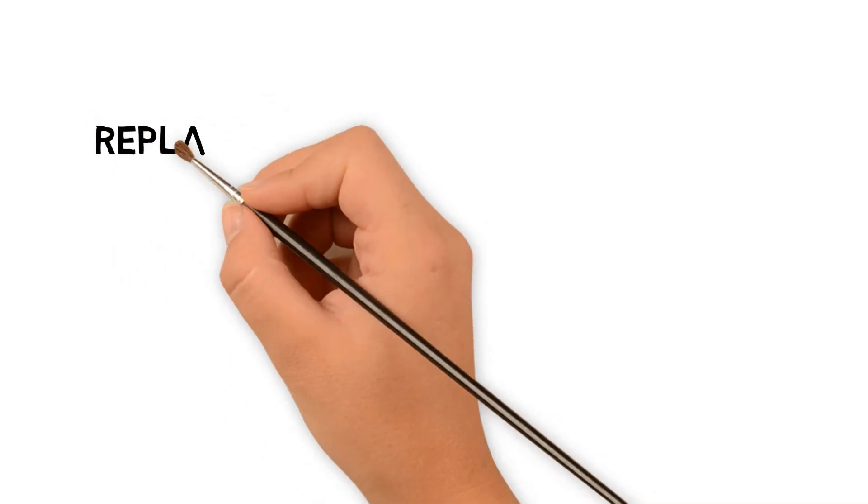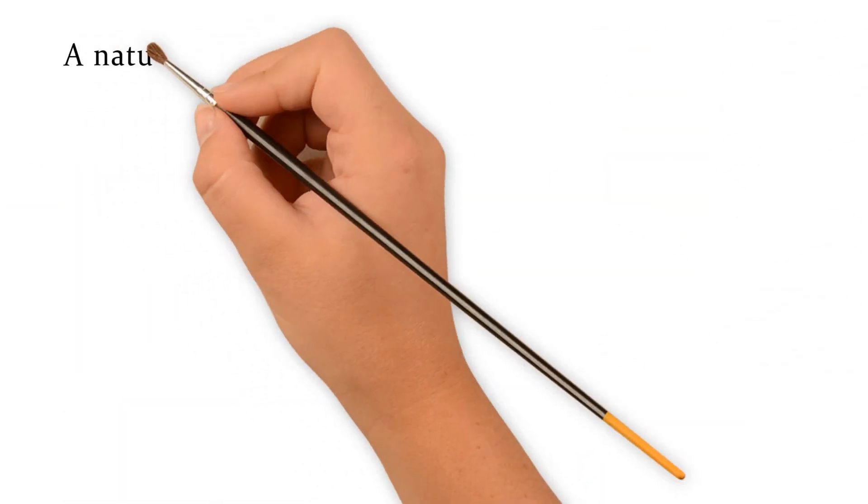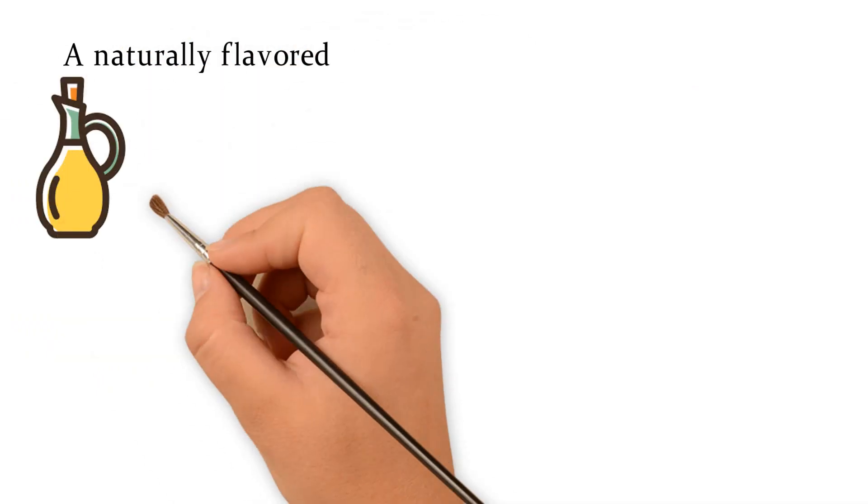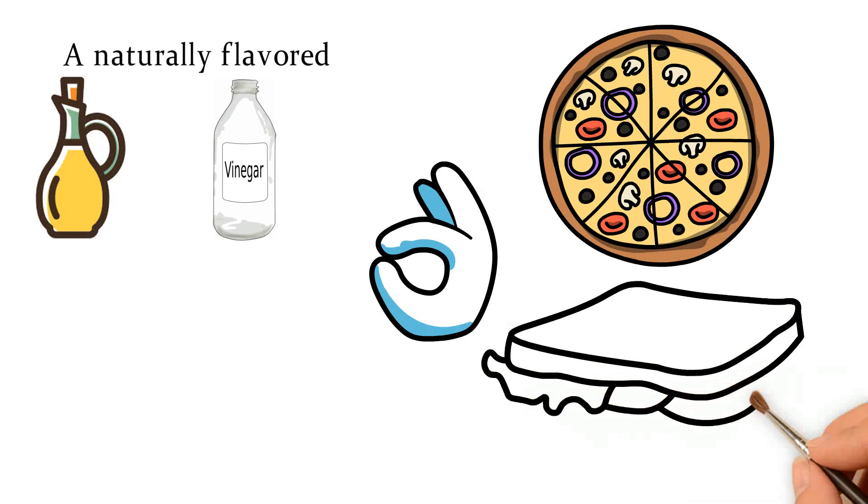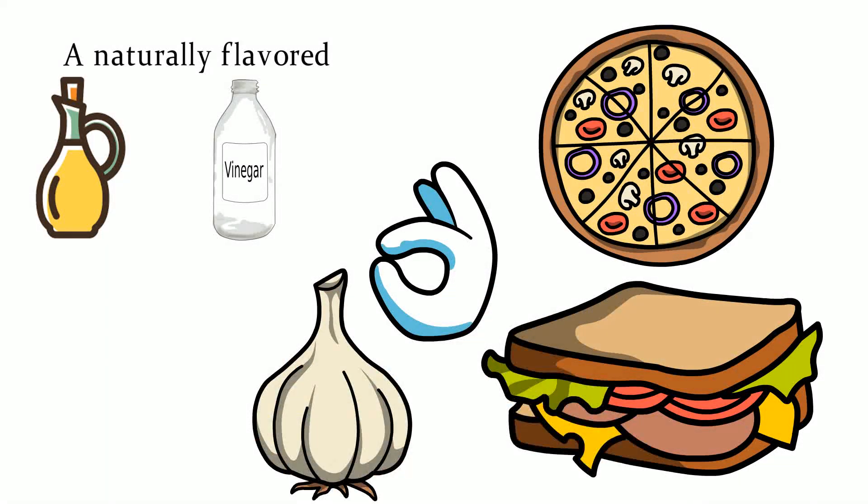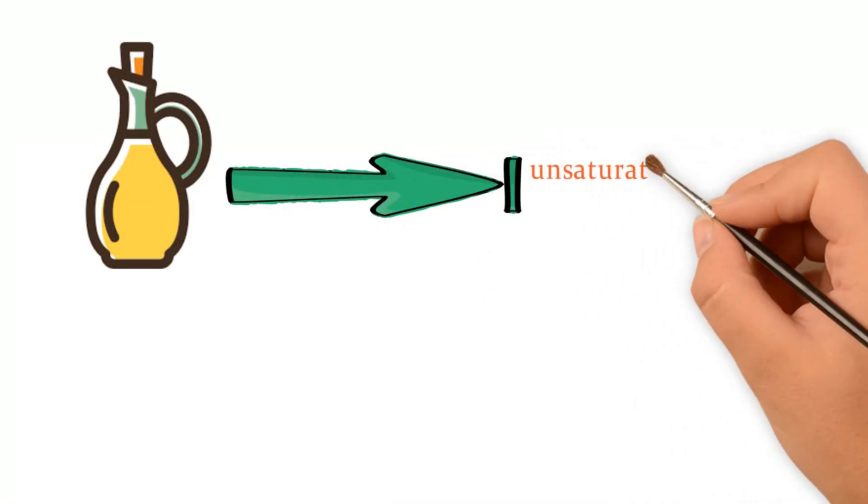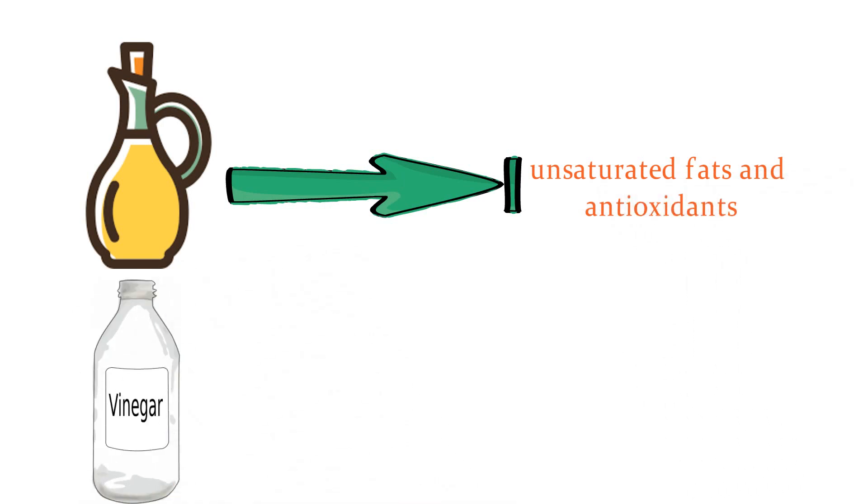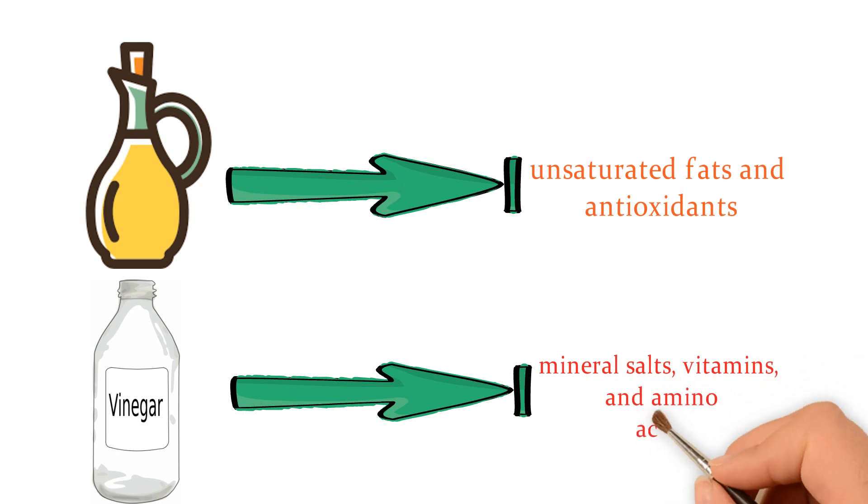You can easily replace ranch dressing with a drizzle of olive oil and vinegar. A naturally-flavored olive oil and vinegar dressing can be a perfect option for your pizzas, sandwiches, bacon, and others. You can also add garlic, parsley, or other fresh herbs to boost the flavor. Olive oil is healthy with a lot of unsaturated fats and antioxidants. Vinegar contains mineral salts, vitamins, and amino acids.